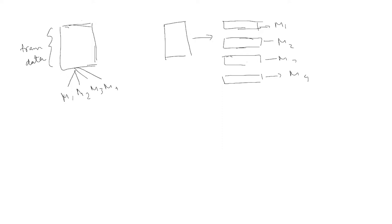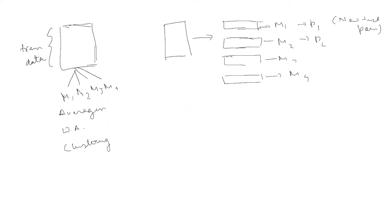We now have multiple models trained on different parts of the data, and again we aggregate them the same way. Options include averaging, which is soft voting or weighted average, or clustering-based methods. Each model gives some probability on a new test data point, and the final probability of all models combined is simply the average of P1, P2, P3, and P4 — just like with naive aggregation.